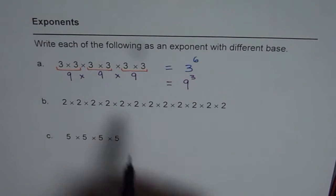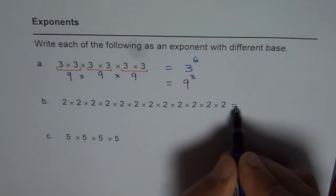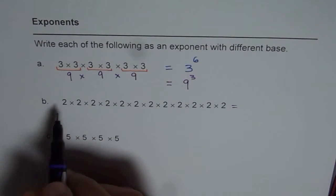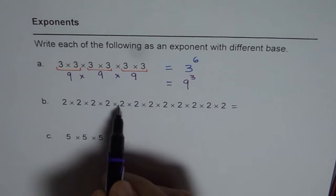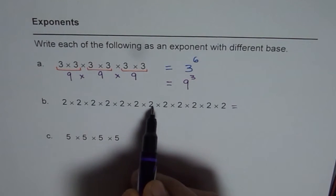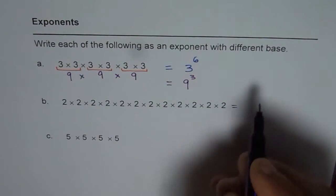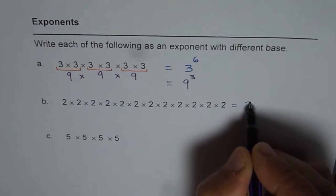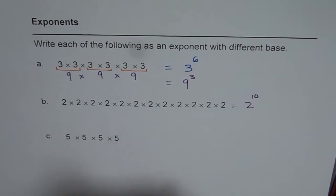Now let's explore with the 2's. How many 2's are there? 1, 2, 3, 4, 5, 6, 7, 8, 9, 10, 11, 12. That means 2 to the power of 12.